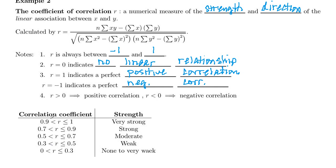Now, if your slope is negative, then you'll just look at the negatives of these. So negative 0.9 to negative 1 is going to be a very strong negative correlation. So it works with both positives and negatives.